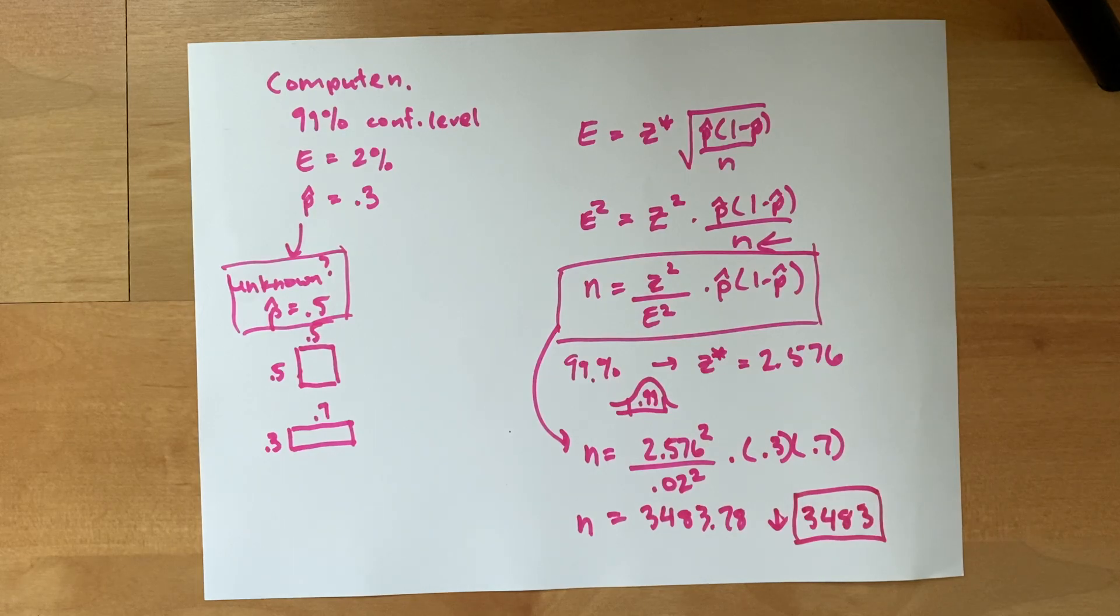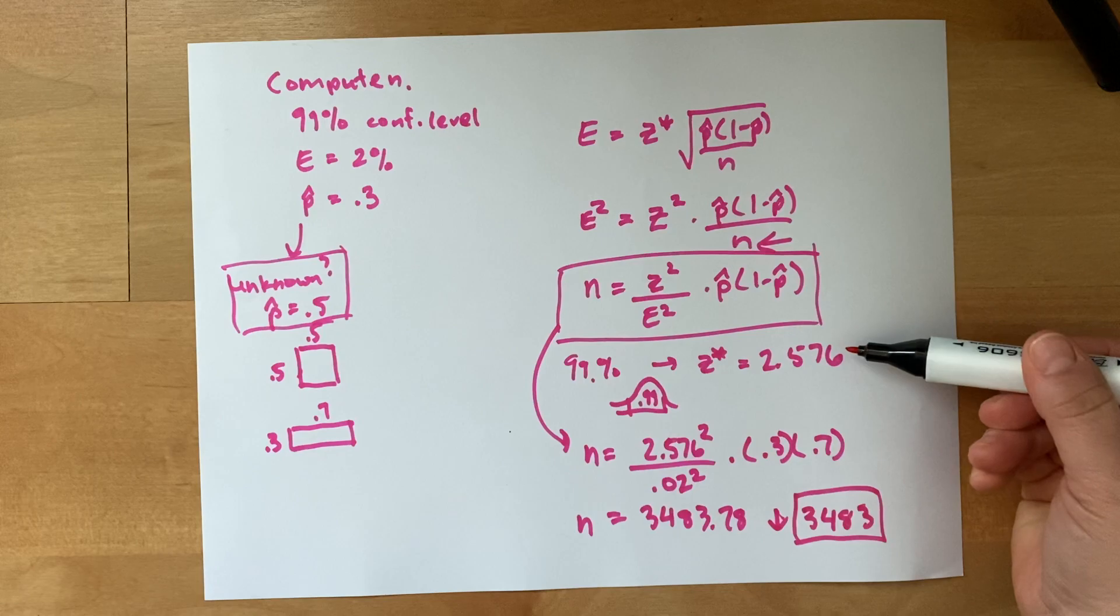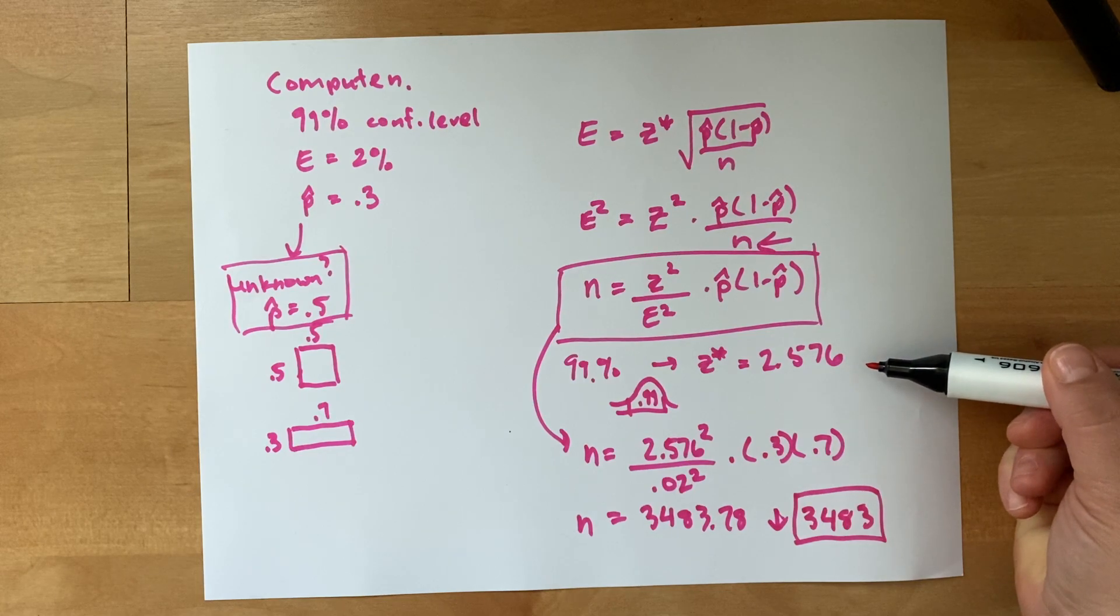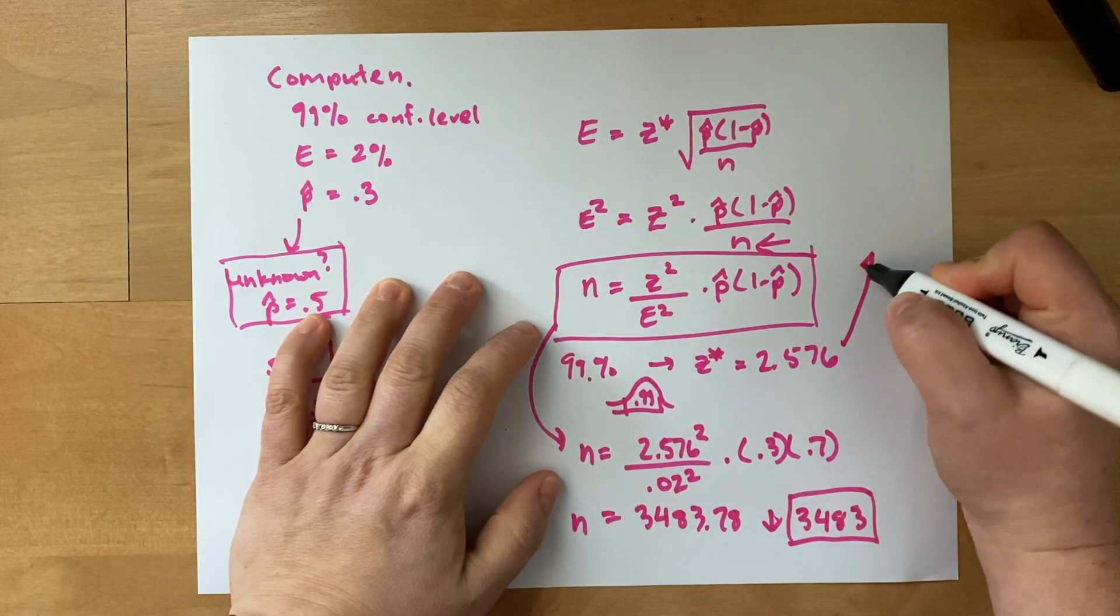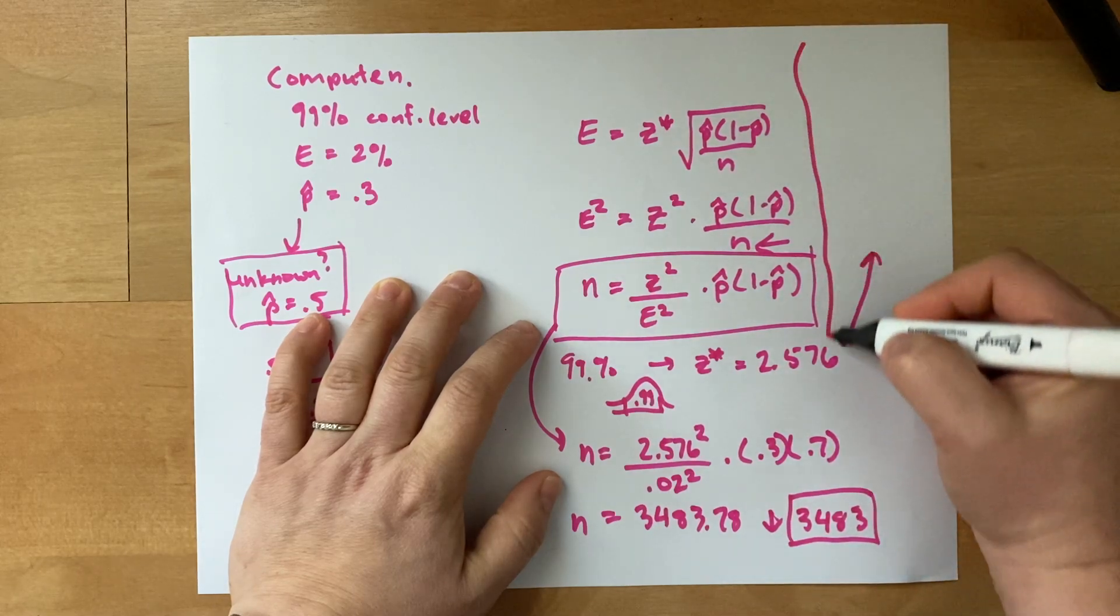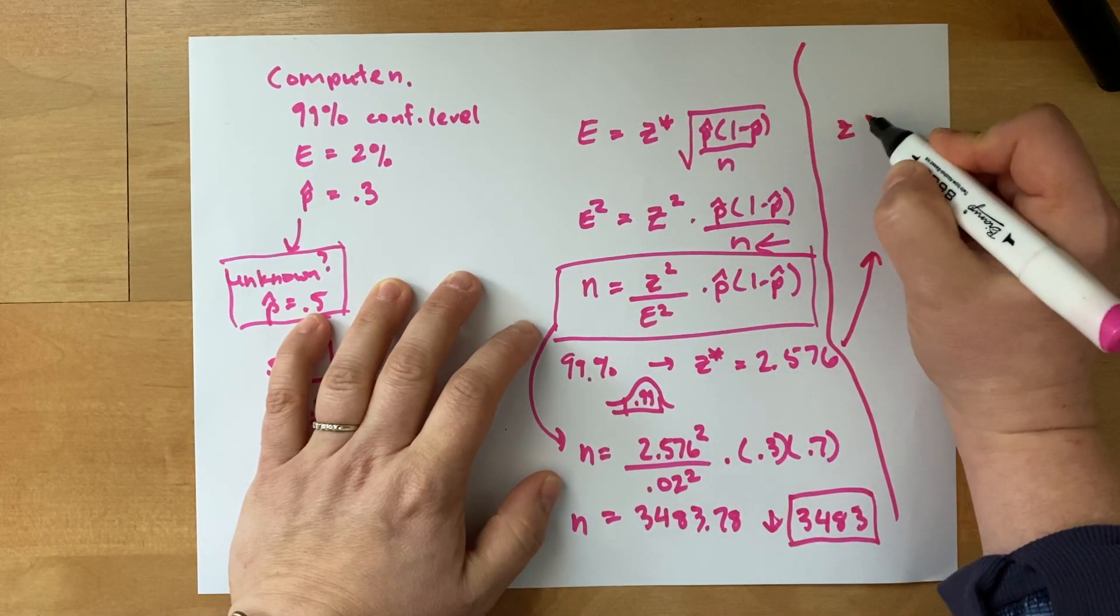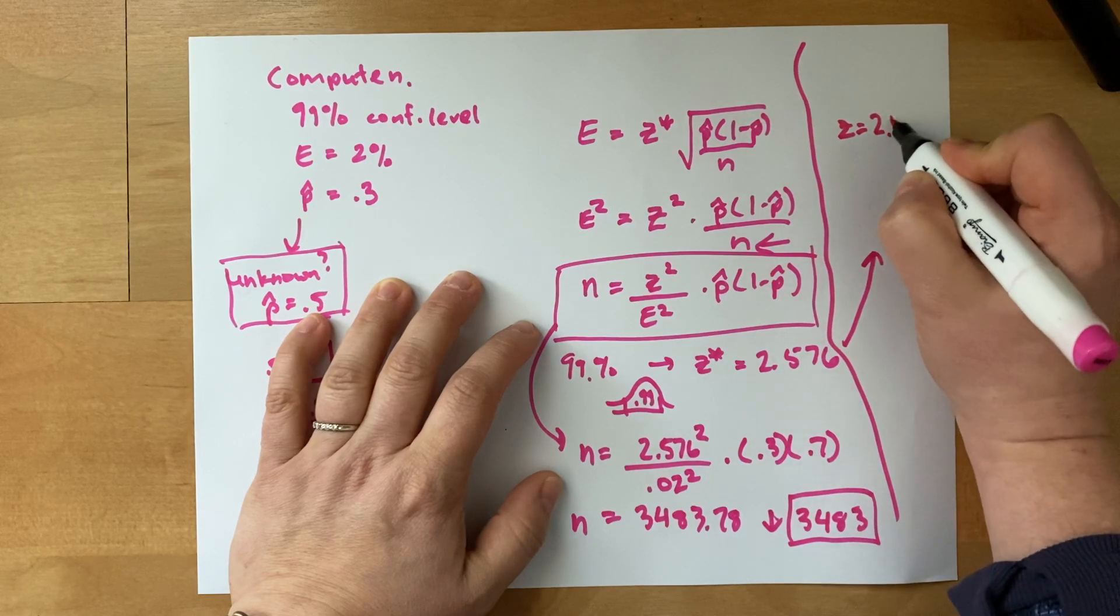Okay, so this is all great if you knew to use 2.576 for your z score. What happens if you used, this is a little aside, z equals 2.58?